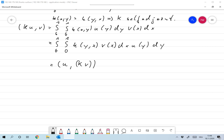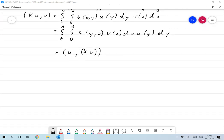And so that's exactly what we want to show. Okay, so if k is symmetric, if small k is symmetric, then the operator is self-adjoint.